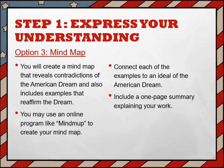Option number three: Mind Map. You will create a mind map that reveals contradictions of the American Dream and also includes examples that reaffirm the dream. You may use an online program like MindMap to create your mind map — Canva is also a great option. Connect each of the examples to an ideal of the American Dream. Include a one-page summary explaining your work.